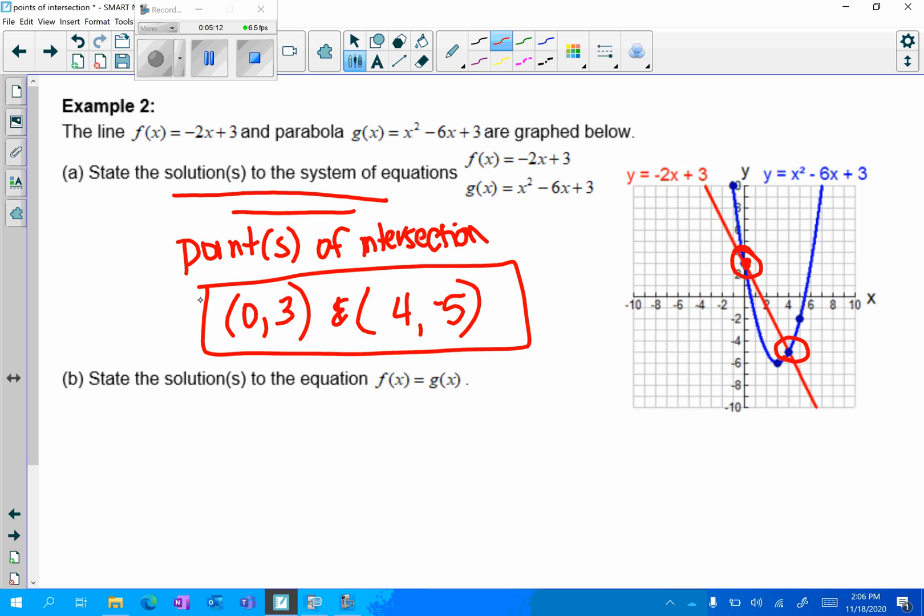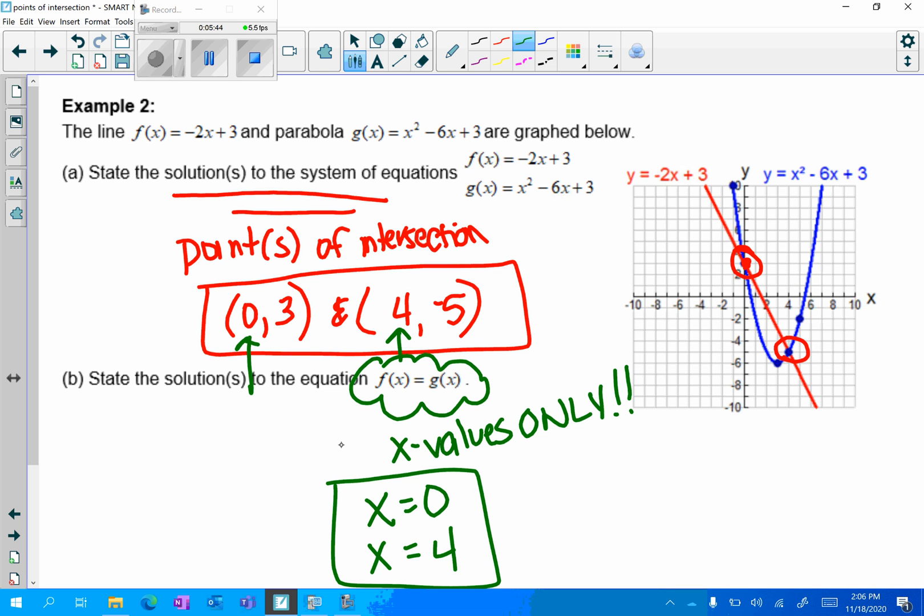This time I didn't have to solve algebraically because I have a graph in front of me. Part b says state the solution or solutions to the equation f of x equals g of x. Whenever you see this, that means they are looking for x values only. So you're still going to look to your point of intersection, but I'm only going to pay attention to my x values. So I have x equals 0 and x equals 4. And this is a very subtle difference but it is a very important difference that you could lose a point for something very silly if you don't pay attention to detail.